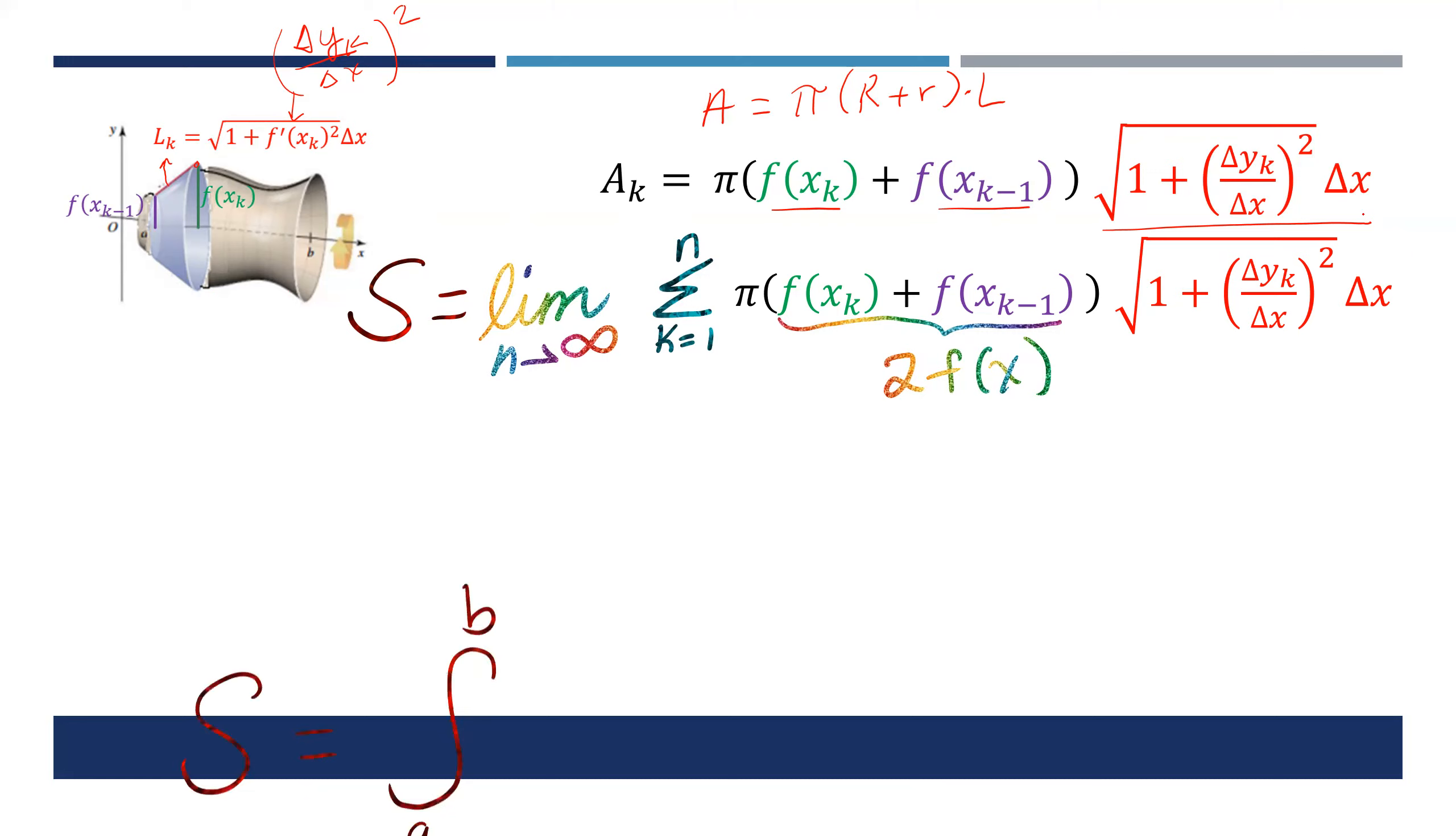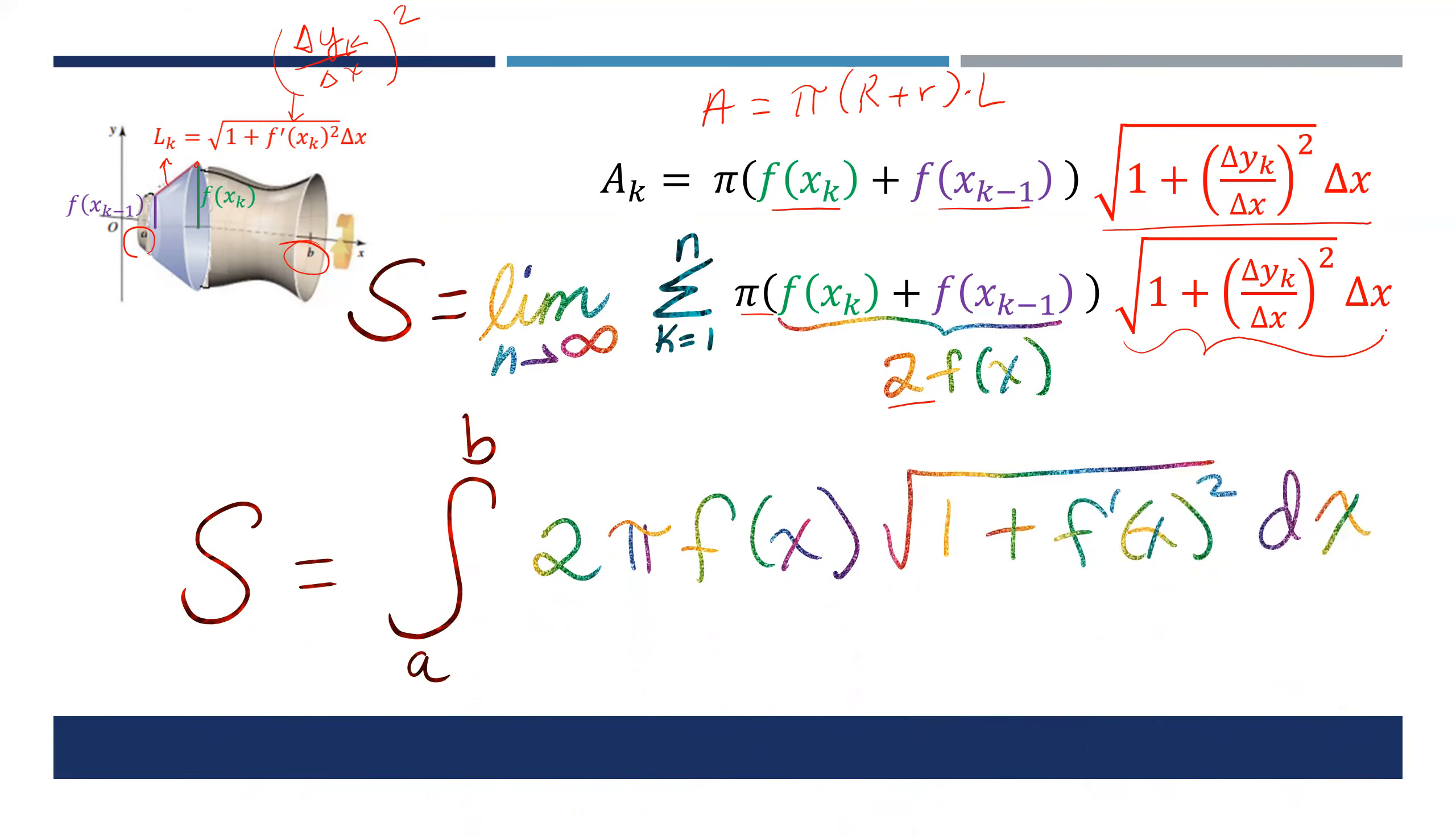The integral will be from a to b. Instead of pi we have 2π f(x). This is the length L and the expression for that was square root of one plus the derivative squared dx. That is the equation of surface area of a solid.